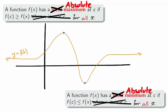Similar to the local extrema, the absolute extrema are the absolute maximum and minimum points on f. A function f has an absolute maximum at c if f(c) is larger than f(x) for all x in the domain of f. Similarly, f has an absolute minimum at c if f(c) is smaller than f(x) for all x in the domain of f.